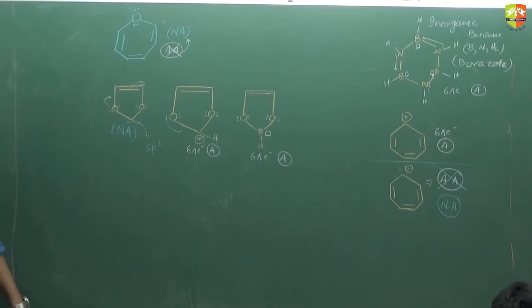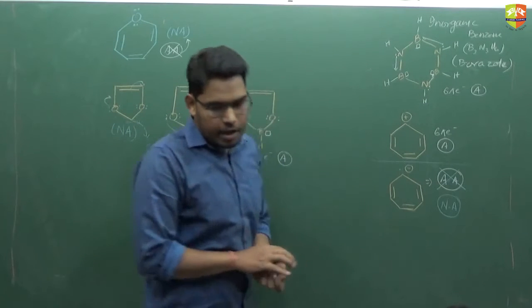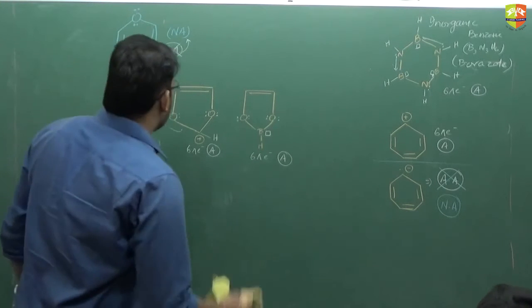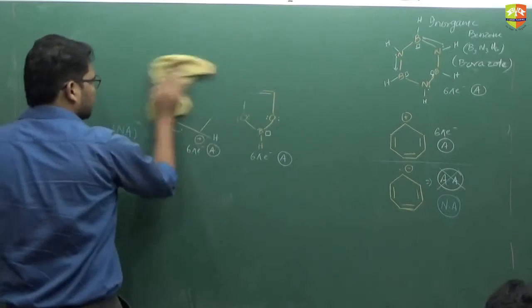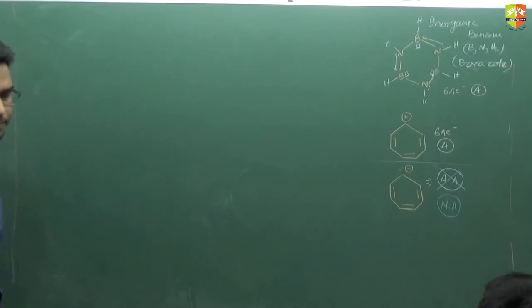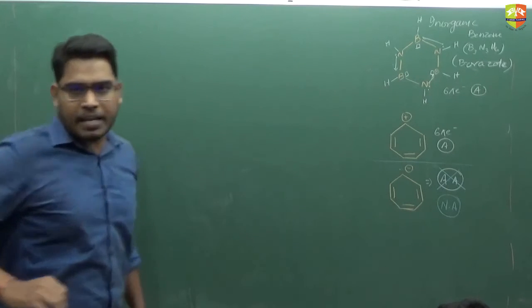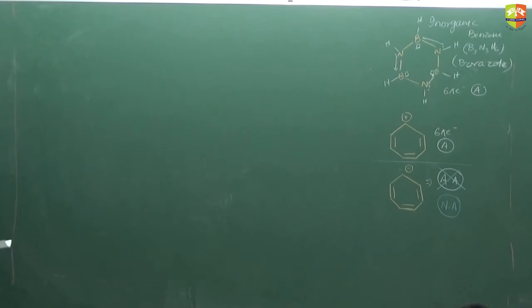Write down aromaticity in case of multicyclic compounds — more than one cyclic structure. In this case we only count the peripheral pi electrons.